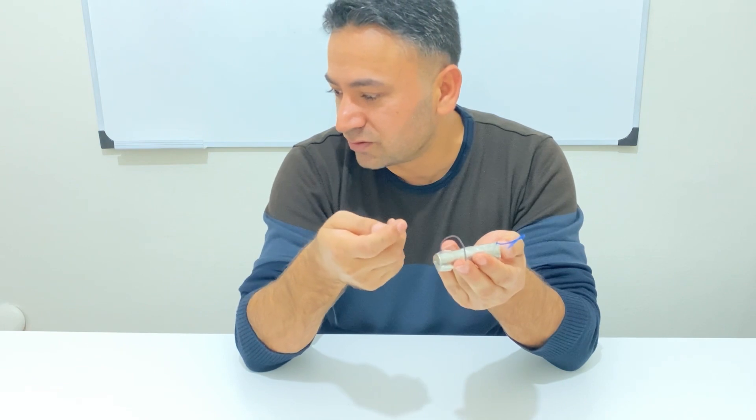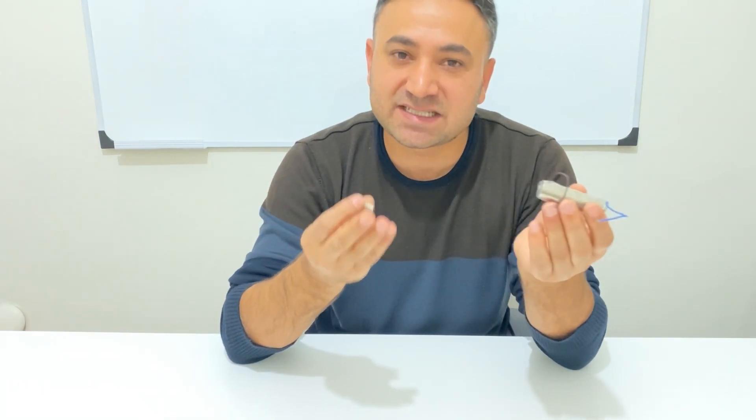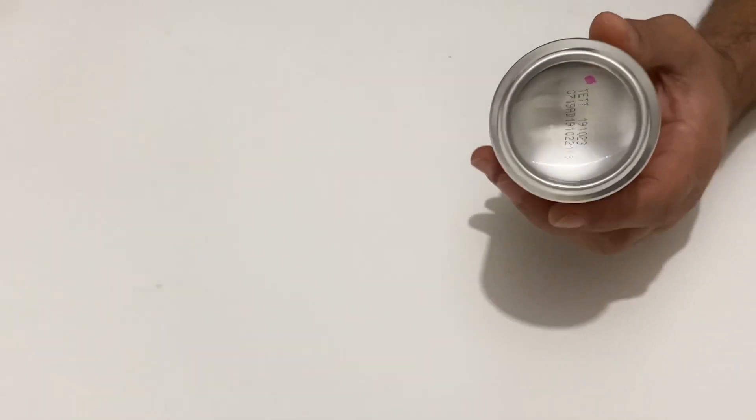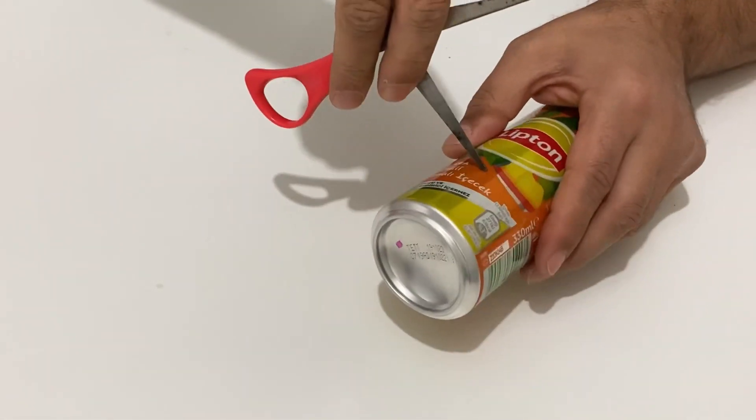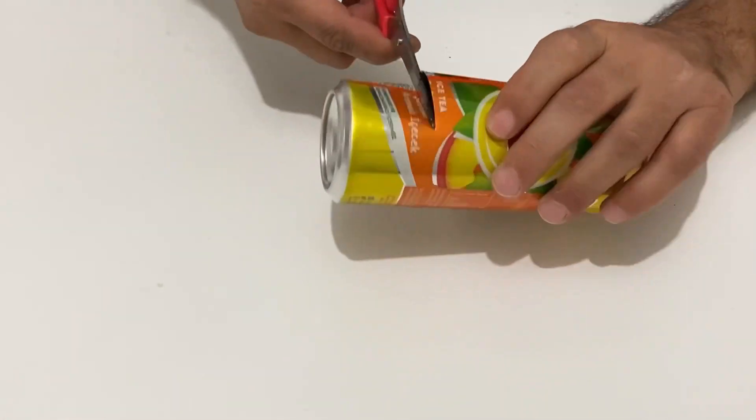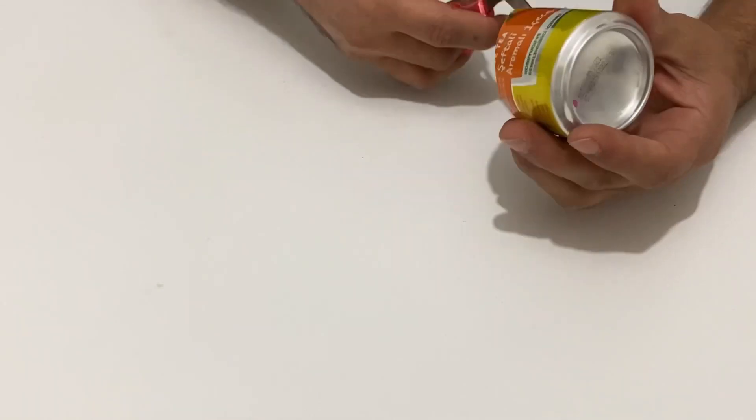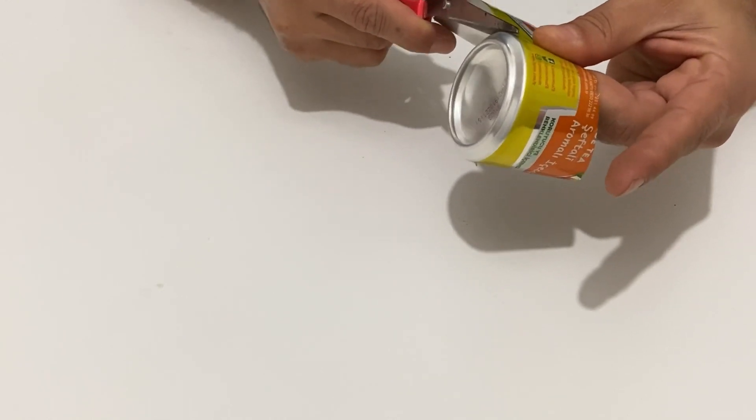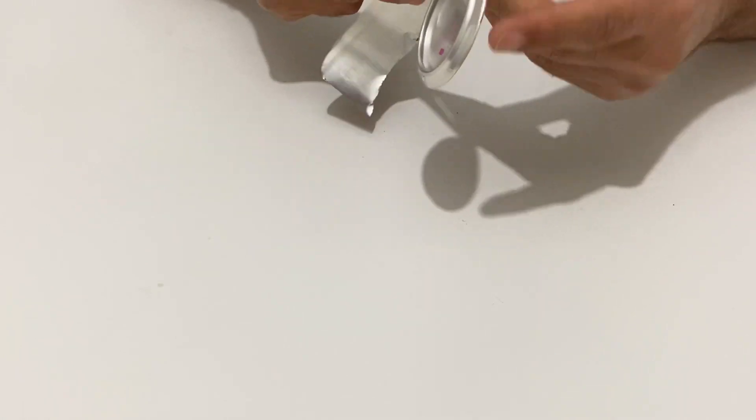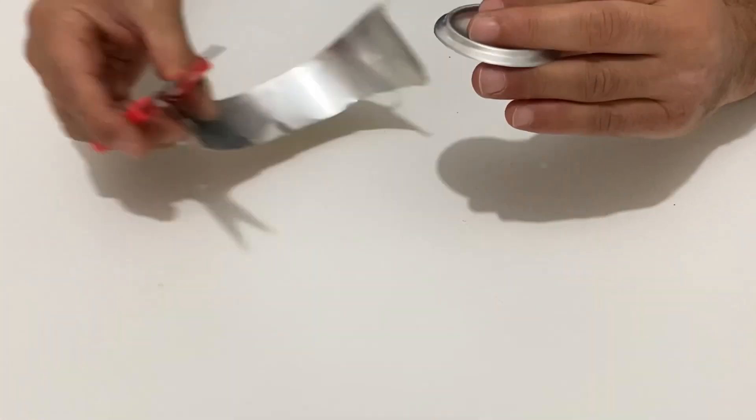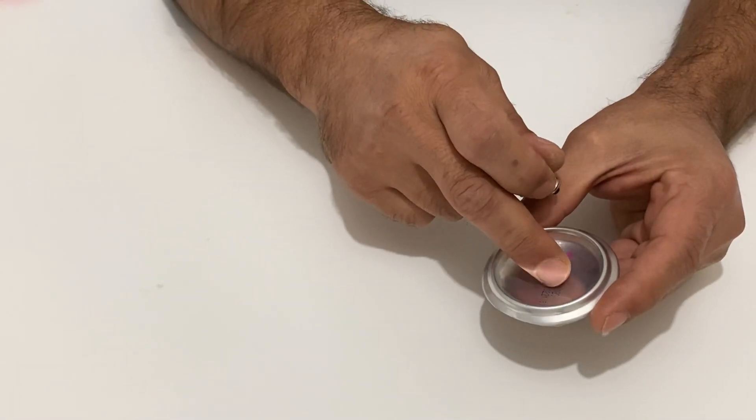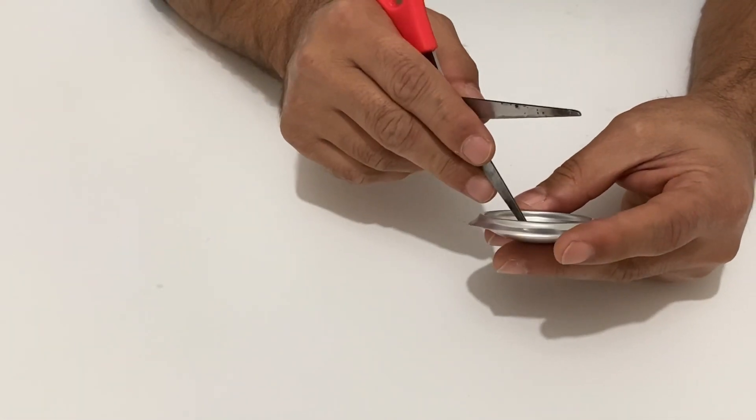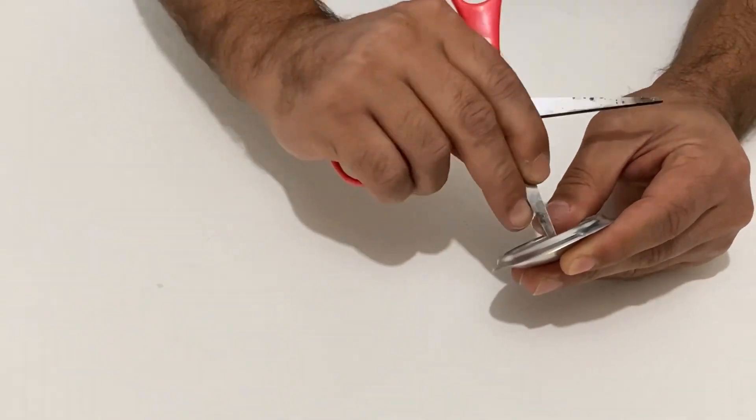Now let's make our project. Thanks for watching in advance and please subscribe to my channel. I'm going to start cutting out this part of the can. Cut it very carefully. Now I will make a very small hole for our bulb just in the middle of the mirror.